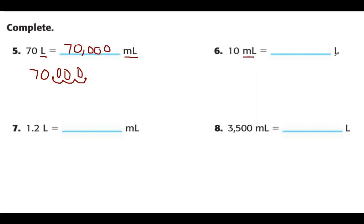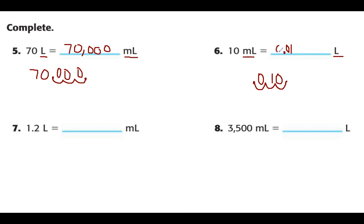Next problem: starting with milliliters, the smaller unit, so we divide by 1,000. The decimal is at the end; moving it three places to the left and filling in the placeholder gives us 0.01. So 10 milliliters is equal to one hundredth of a liter. The zero in front doesn't change the answer — it is still one hundredth of a liter.